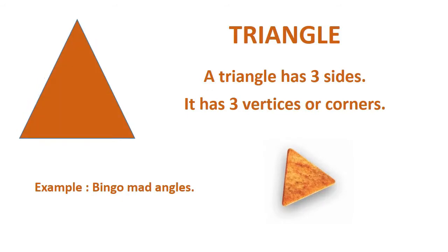Triangle. A triangle has three sides. It has three vertices or corners. Example: bingo medangles.